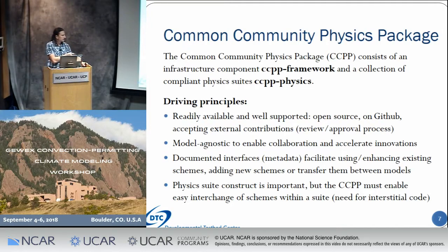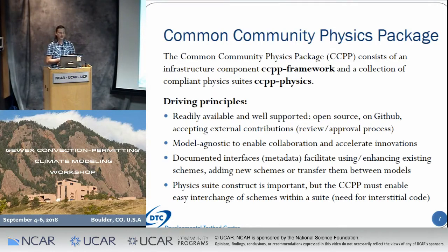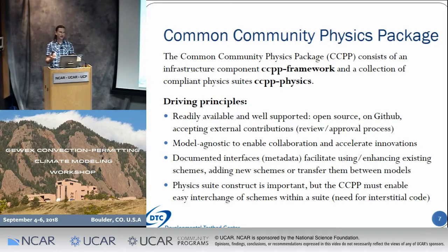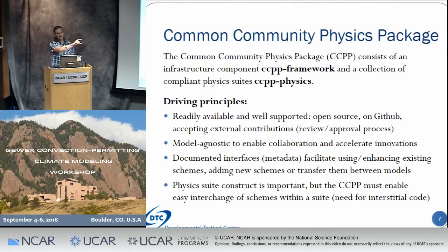Although the idea of a physics suite construct — a vetted combination of physics parameterizations that play together and are supported and tested — is important, the CCPP must also be able to exchange schemes easily within a suite. So if you want to replace one deep convection scheme with another, this should be possible. A lot of the 22,000 or so lines of driver code in WRF are what we call interstitial or glue code, which ties schemes together — for example, preparing an array from deep convection so it works with the next shallow convection scheme.